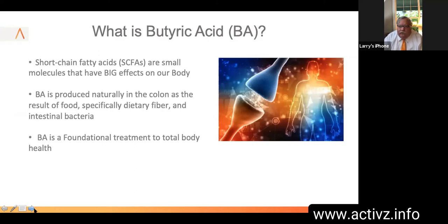Butyric acid is a short-chain fatty acid — one of several that the body produces. The interesting thing about butyric acid is that it's the primary energy source for the epithelial cells within the gut lining. It's produced naturally in the colon as a result of the type of food that we eat — specifically dietary fiber combined with intestinal bacteria. Butyric acid is a foundational treatment throughout the entire body system.